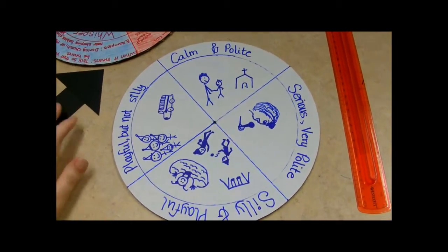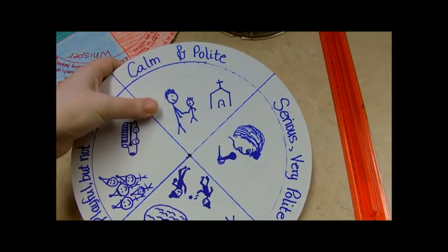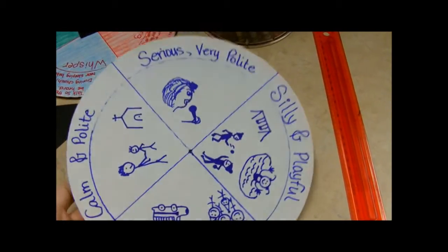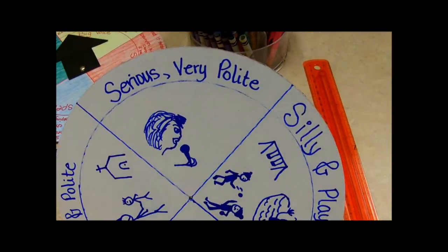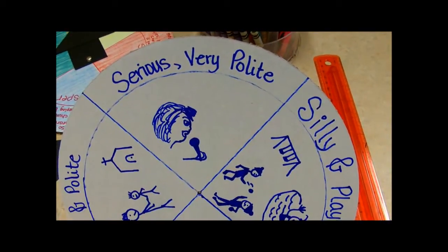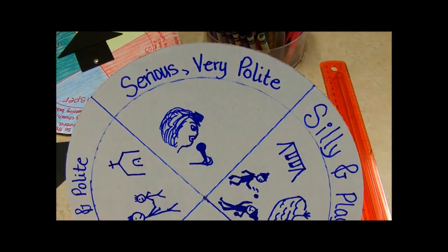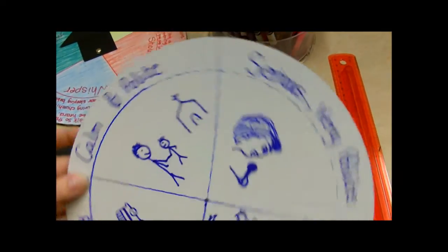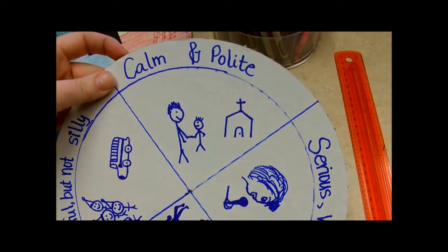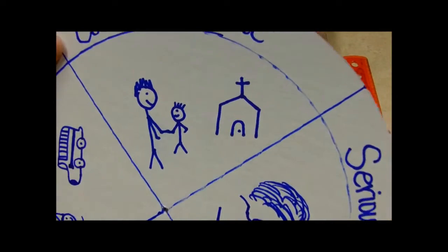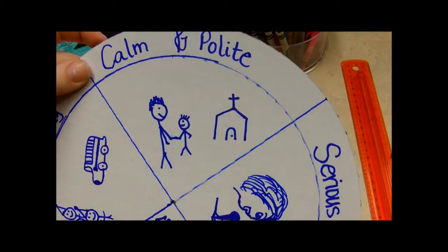Here are some of the examples I came up with. For calm and polite, well let's start here. Serious and very polite would be maybe when giving a speech or anything that's very formal. Calm and polite would be like at church or when meeting with adults, talking with your teacher, things like that.